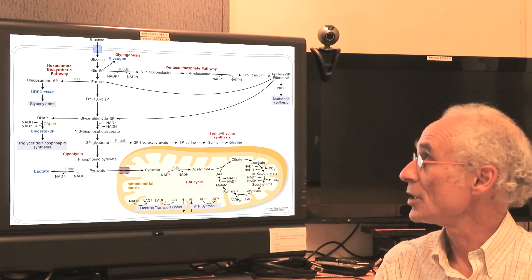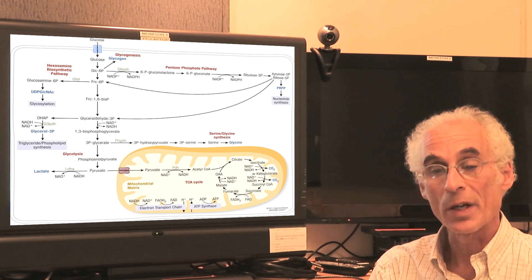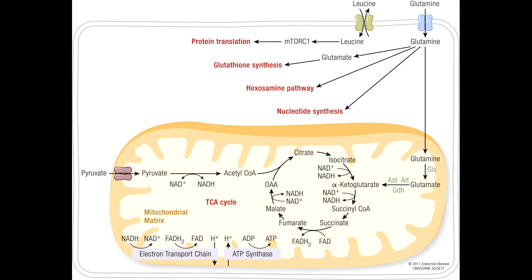But in addition to that, we describe other fuel sources that may be important. One is amino acids, such as glutamine or glutamate and leucine, which can also feed into the citric acid cycle to produce energy, that is ATP, for these